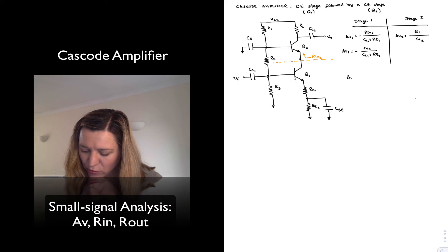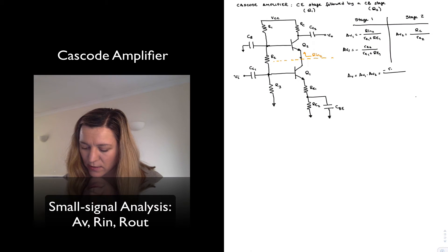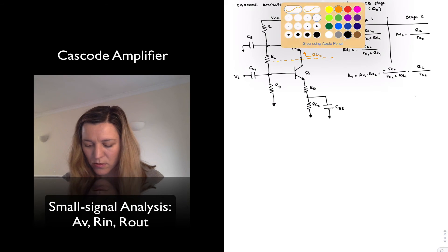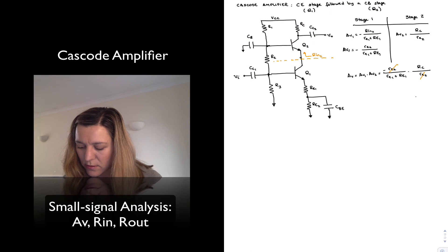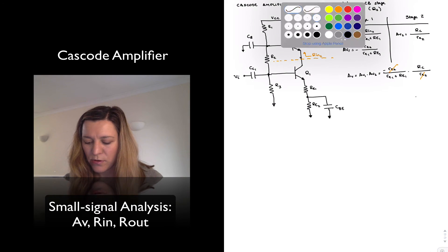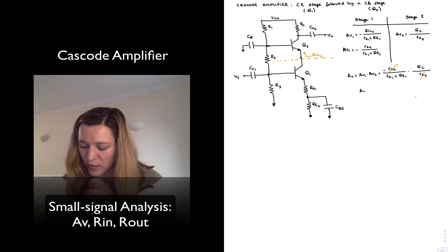My overall gain is equal to the product of the two gains, or negative re2 divided by re1 plus capital RE1 times Rc divided by little re2. I can eliminate the re2 and be left with an overall voltage gain of negative Rc divided by little re1 plus capital RE1.